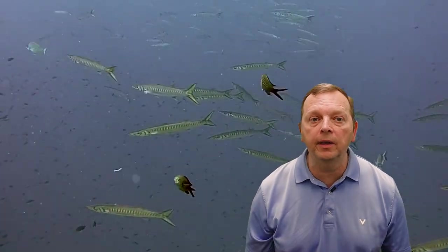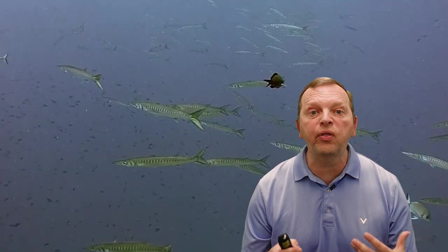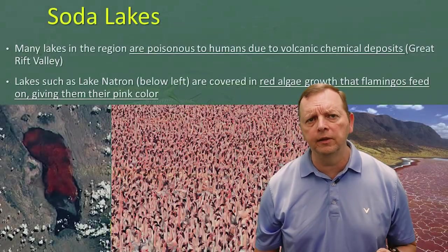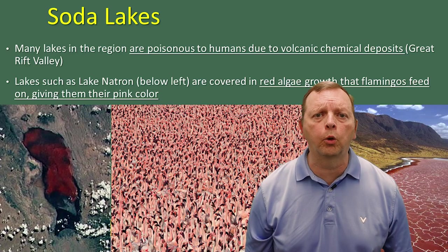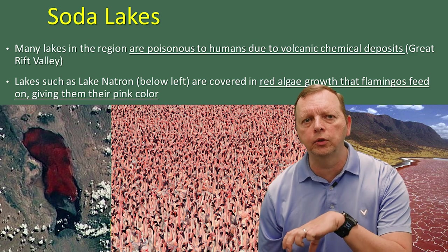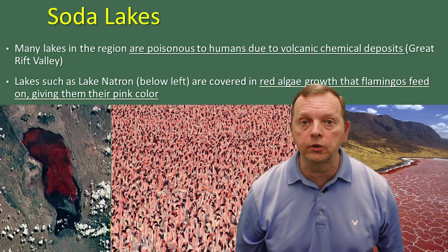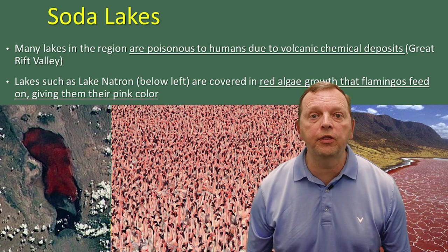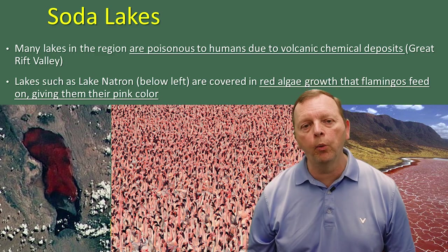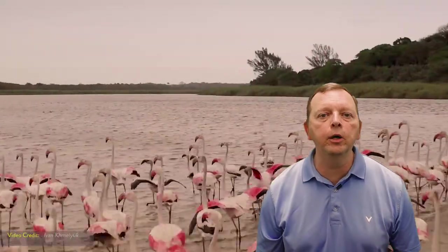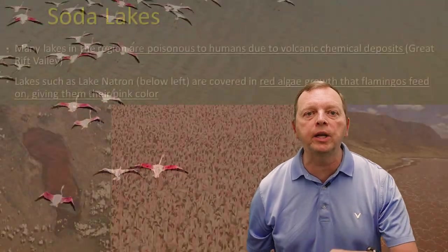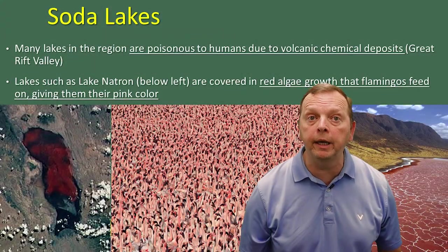Some biologists estimate that there are actually up to 2,000 different species of fish. Another interesting thing about the lakes of the Rift Valley is that many of these lakes are what we call soda lakes. Due to the volcanic activity, volcanic chemical deposits make the lakes poisonous to humans. However, other animals can thrive in these lakes — for example, red algae, which flamingos will eat. What a lot of people don't realize is that flamingos are actually born either white or gray. It is the beta-carotene in this red algae that actually turns flamingos pink.